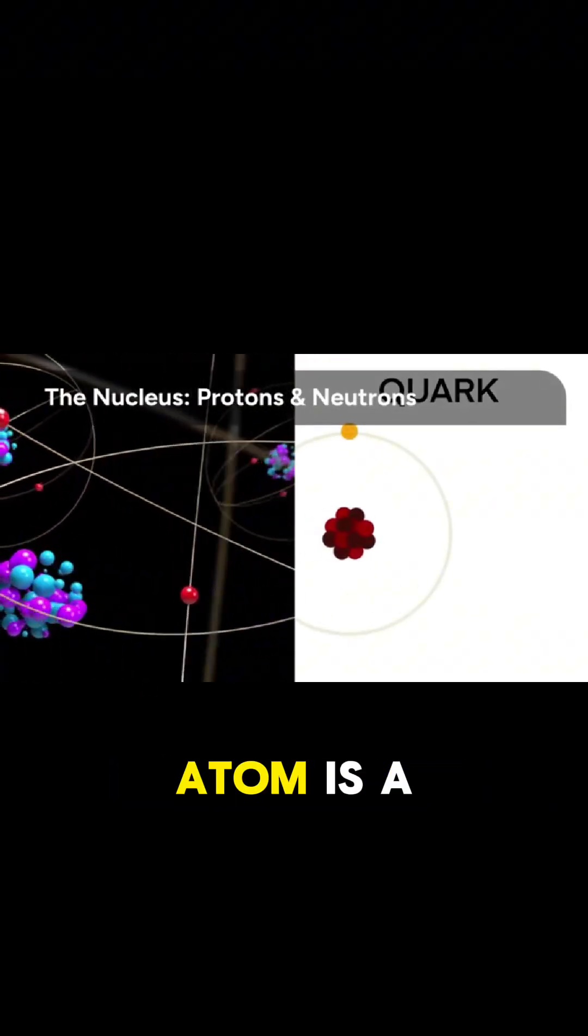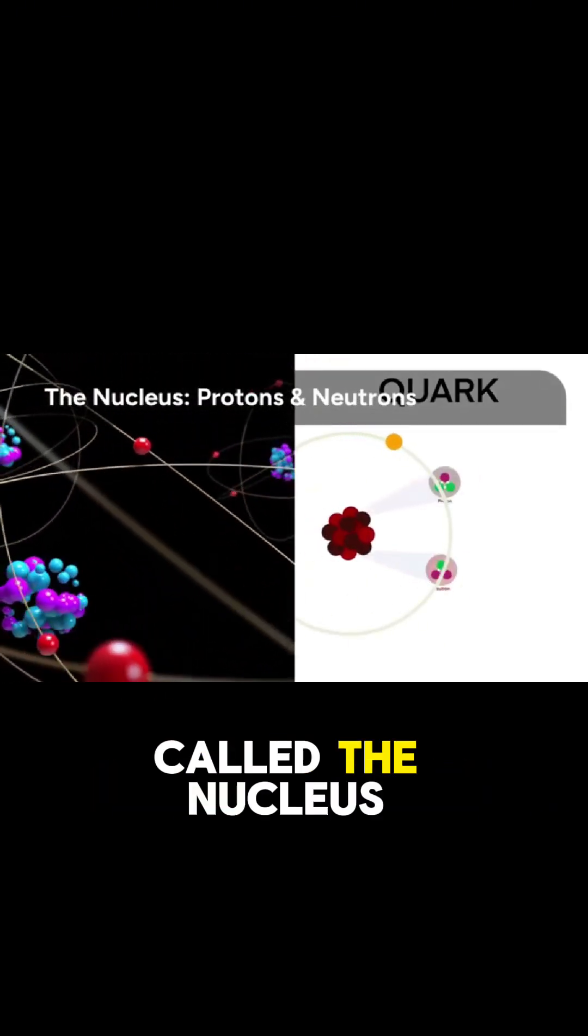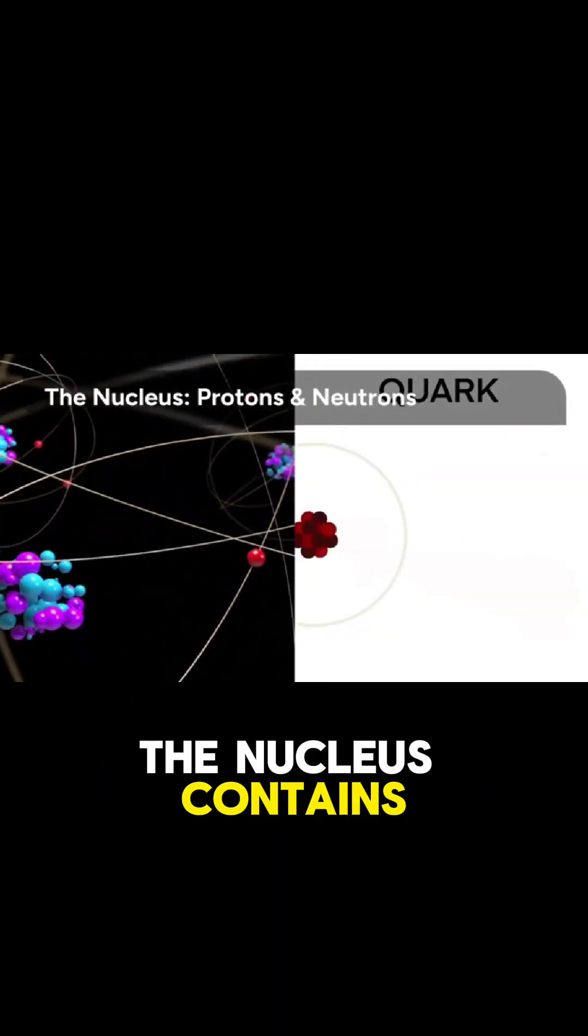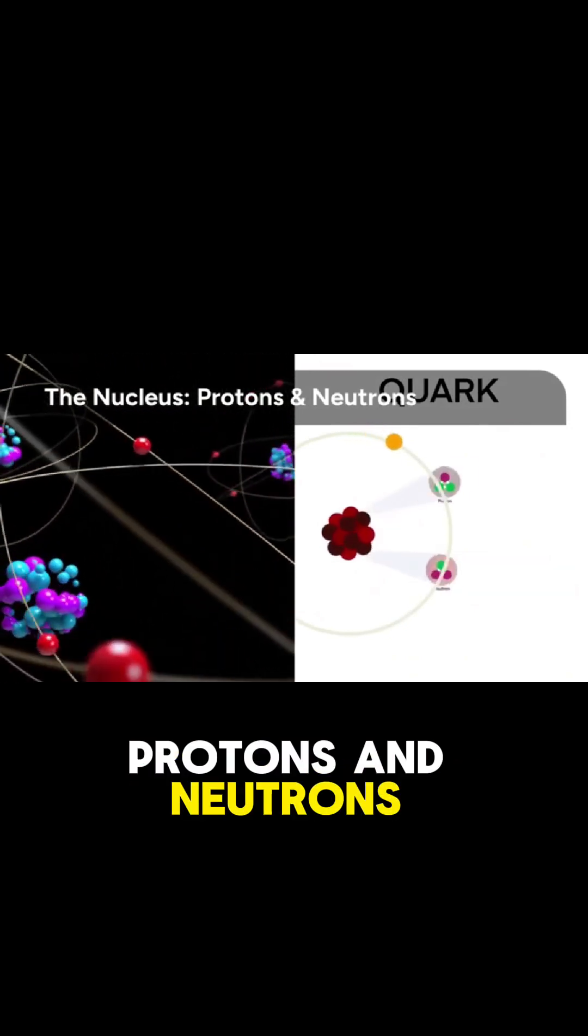At the very center of every atom is a dense core called the nucleus. The nucleus contains two main types of particles, protons and neutrons.